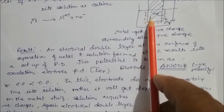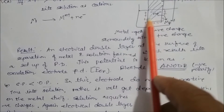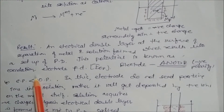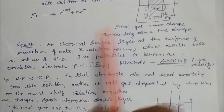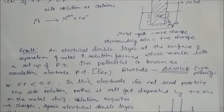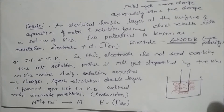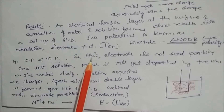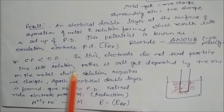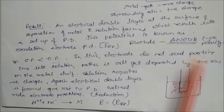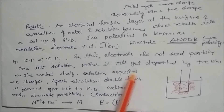At the metal-solution interface, a double layer forms — one layer of electrons and one of positive ions — and this double layer establishes a potential difference, making this an anode with negative polarity. Case 3: if solution pressure is less than osmotic pressure, electrons do not send positive ions into the solution. Instead, positive ions from the solution get deposited on the metal itself, and the solution acquires negative charge.